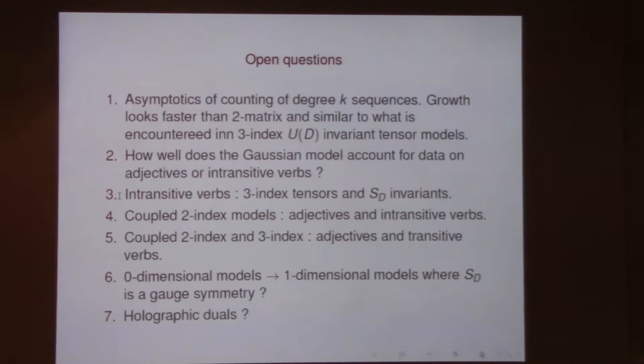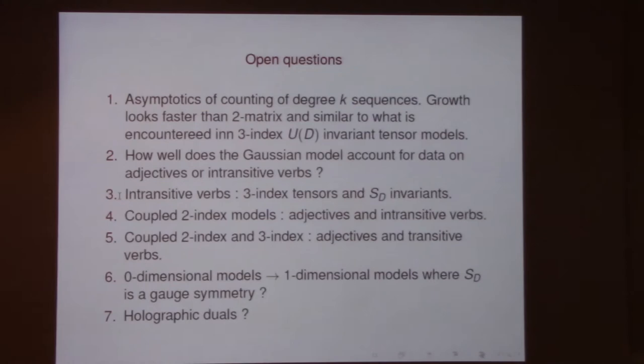Will these techniques be useful for outstanding problems in linguistics, like translating Linear A or other undeciphered languages? If you can find patterns in how symbols correlate in these languages, this could potentially have applications to many different problems — whenever you have a large collection of matrices or tensors where there's some underlying permutation symmetry, these models could be useful.